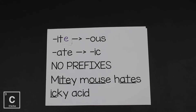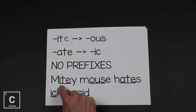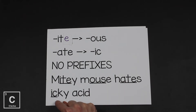Since there are two different endings to polyatomic ions, there are two different ways to identify them. If the acid contains a polyatomic ion that ends in -ite, that ending has been changed to -ous. So if we see an acid that ends in -ous, we know it originally came from a polyatomic ion ending in -ite. Ate changes to -ic. Oxy acids do not use prefixes. We can use the mnemonic device: Mighty Mouse Hates Icky Acid, where -ite becomes -ous and -ate becomes -ic.